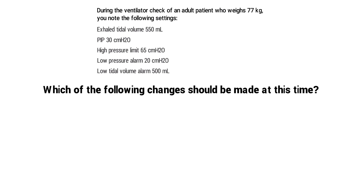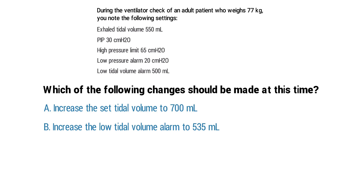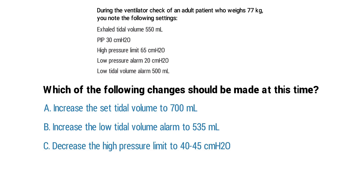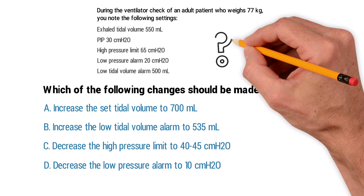A low pressure alarm of 20 and a low tidal volume alarm of 500 milliliters. Which of the following changes should be made at this time? A) increase the set tidal volume to 700 milliliters, B) increase the low tidal volume alarm to 535 milliliters, C) decrease the high pressure limit to 40 to 45 centimeters of water pressure, or D) decrease the low pressure alarm to 10 centimeters of water pressure.